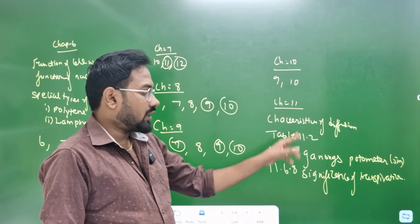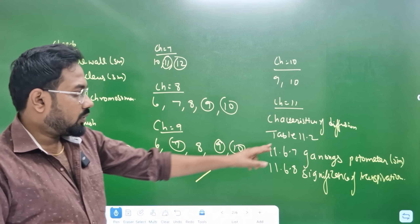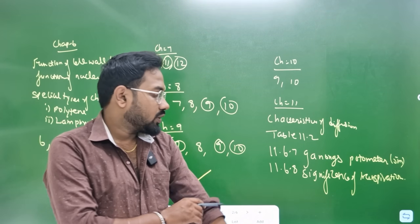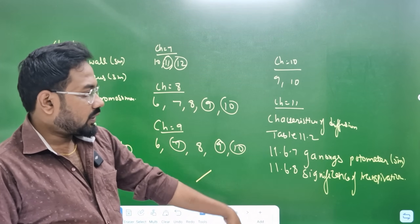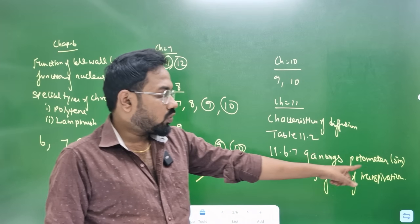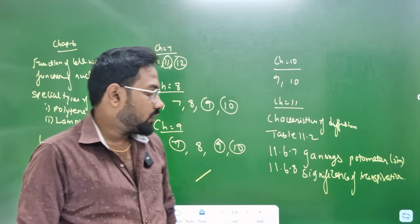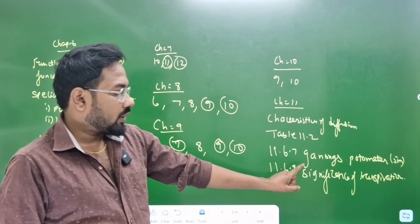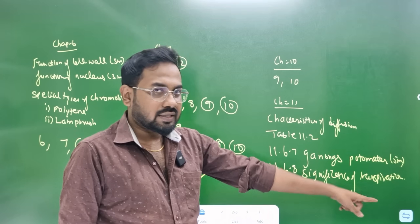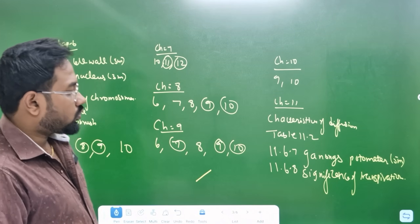Chapter 11 — cadistics of diffusion. Table number 11.2, section 11.6.1. Ganganence photometer — 5 marks, confirm. Section 11.6.8, paragraph number. Significance of transpiration — 5 marks.